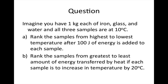Question: 1 kg each of iron, glass, and water are all at 10°C. After 100 J is added to each, rank from highest to lowest temperature. Water has the largest specific heat, then glass, then iron, so iron's temperature changes the most — iron is hottest. Part B: to increase each sample by 20°C, water requires the most heat, then glass, then iron, because water has the largest specific heat.